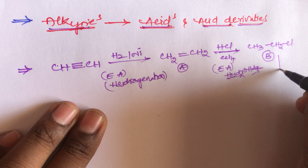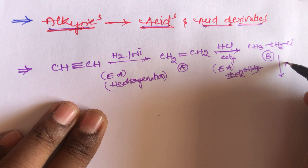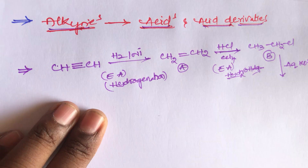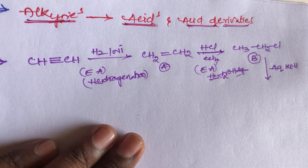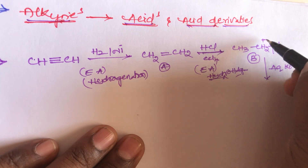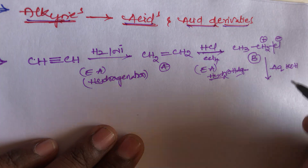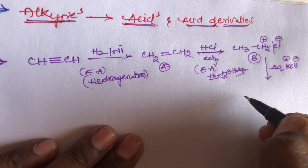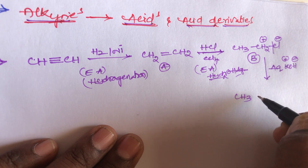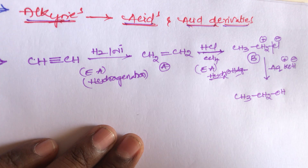This ethyl chloride reacts with aqueous KOH. Here nucleophilic substitution reaction is involved: K⁺ and OH⁻ — the Cl⁻ is replaced by OH⁻. So we get the product CH₃CH₂OH — ethyl alcohol will be formed.